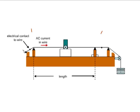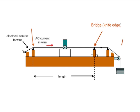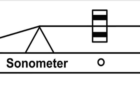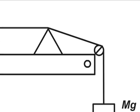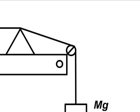On the box are two fixed bridges near the ends and at one end is a pulley. A string, often a steel wire, is fastened at one end, run over the bridges and pulley and attached to a weight holder hanging below the pulley.